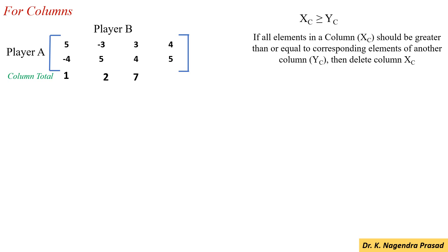And the fourth column total is 4 plus 5, which is 9. Among these values, the maximum value is 9. So, select the 4th column and compare its elements with the 1st, 2nd, and 3rd columns.